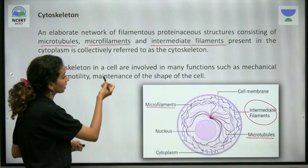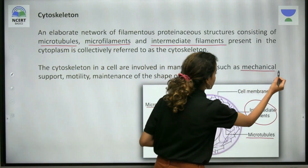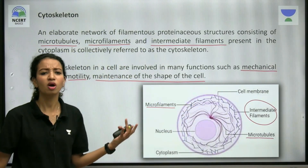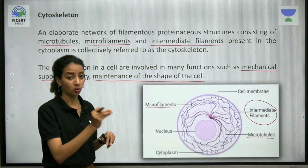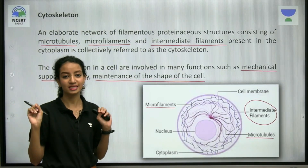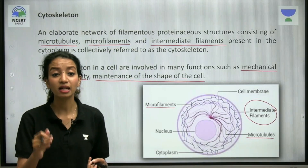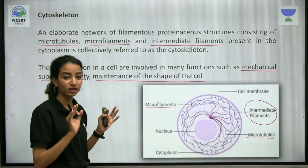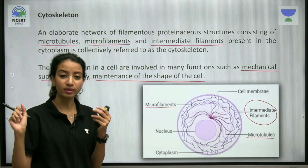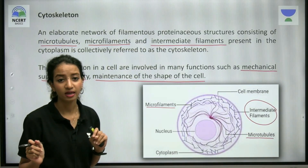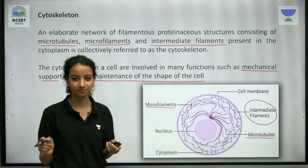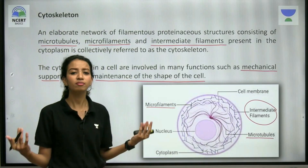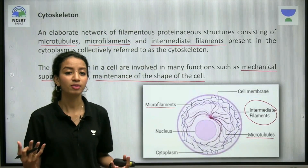The cytoskeleton in a cell is involved in many functions: it provides mechanical support, it helps in motility, and it maintains the shape of the cell — just like the normal functions of the skeleton in our body. These filaments within the cytoplasm also help in movement, because cytoskeleton structures are part of cilia, flagella, and muscles. Microtubules are found in cilia and flagella, which are locomotory structures, while microfilaments are found in muscles.